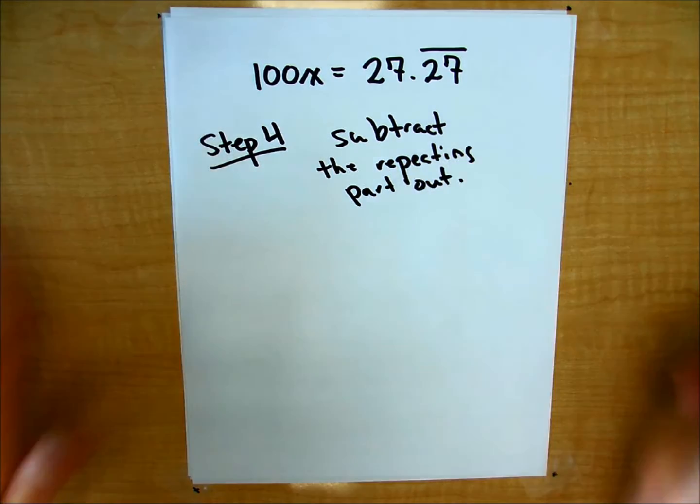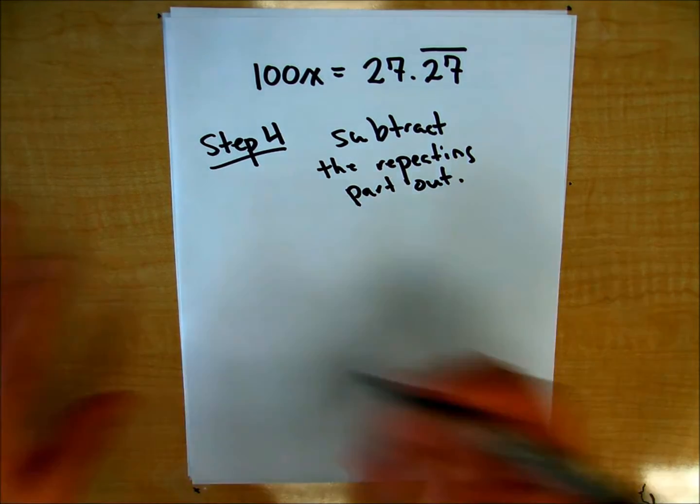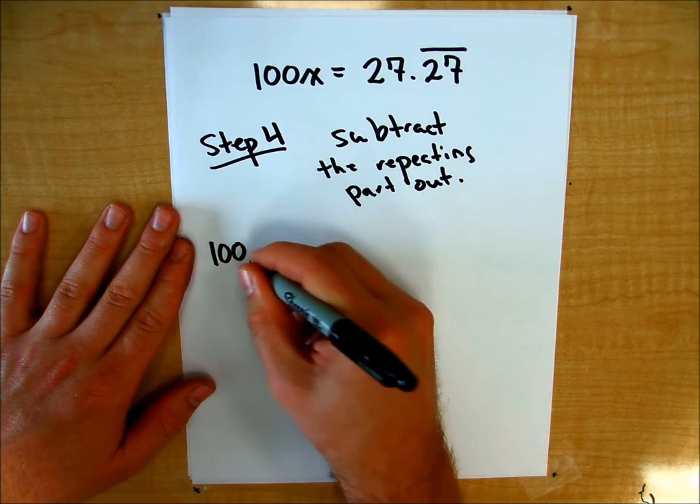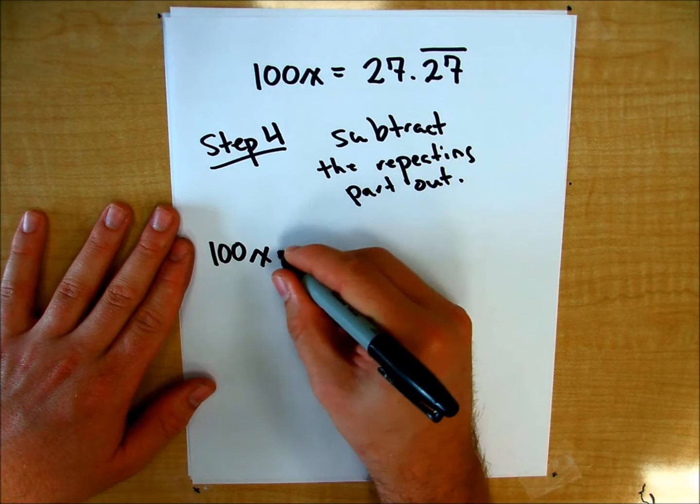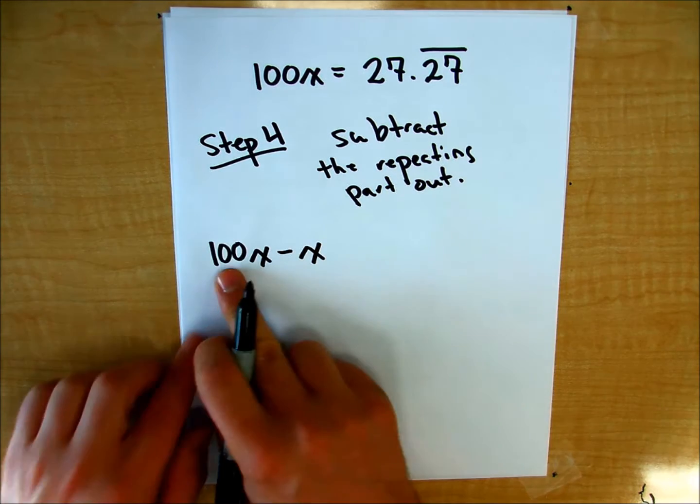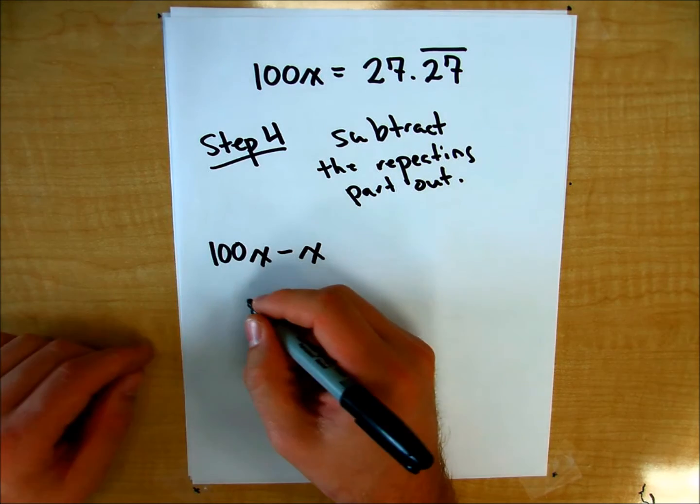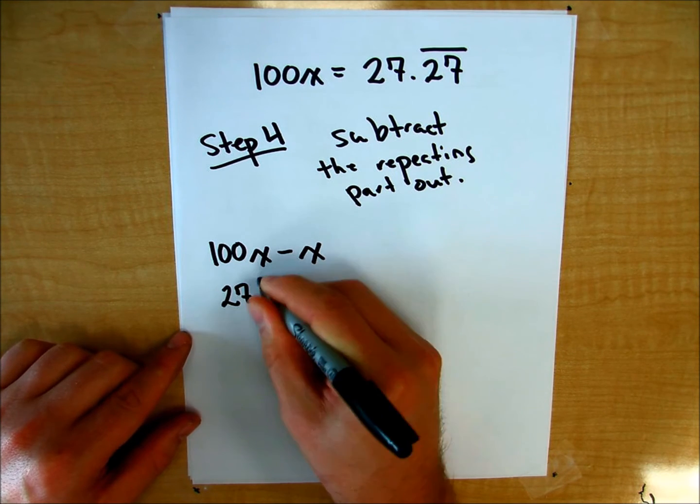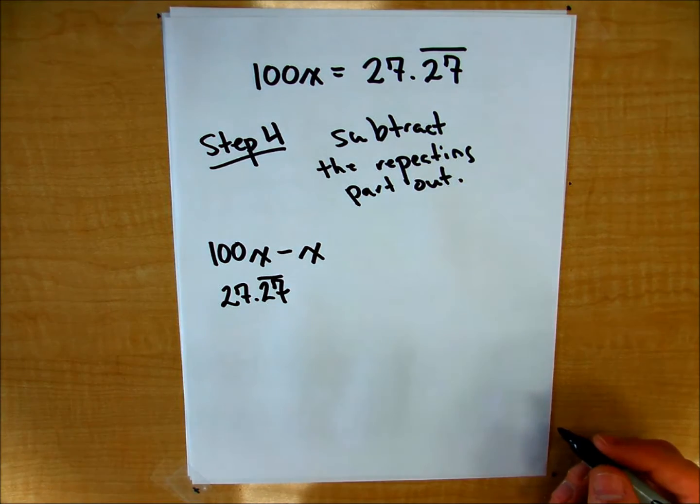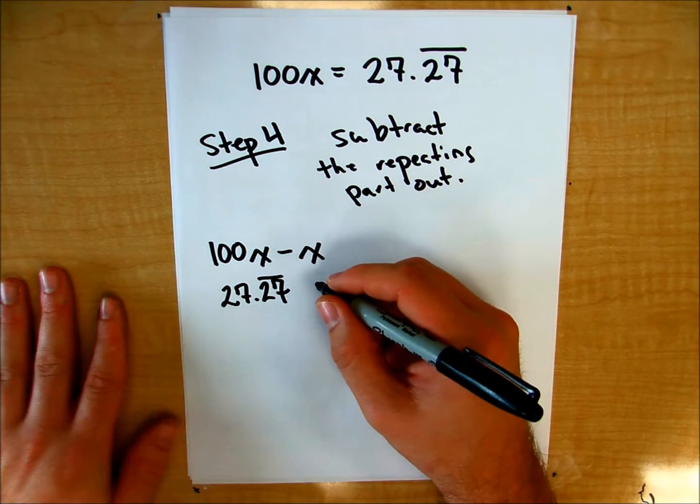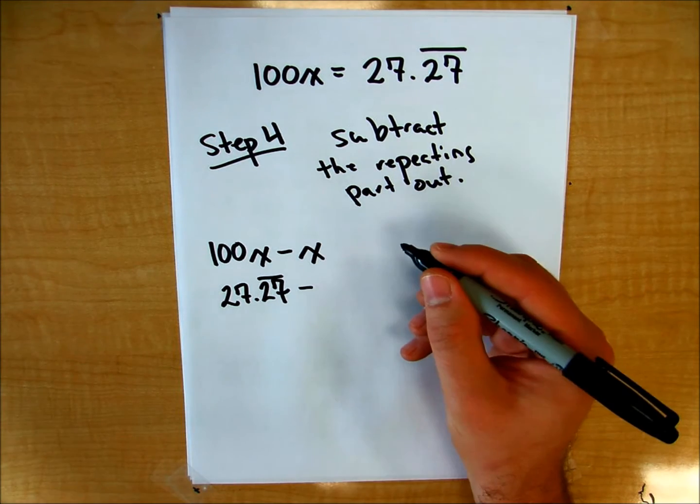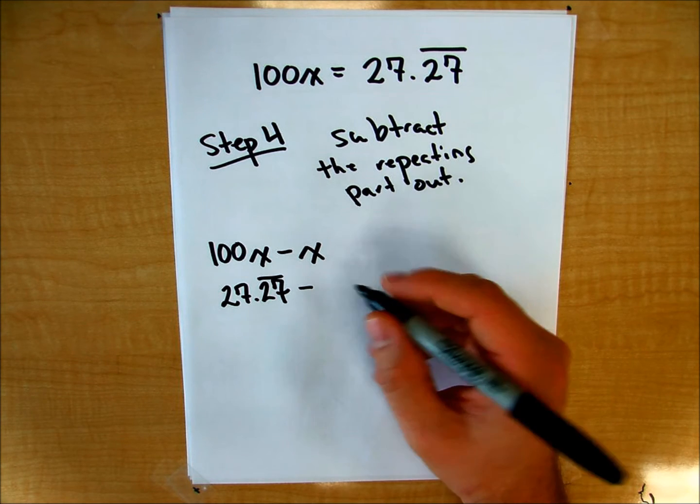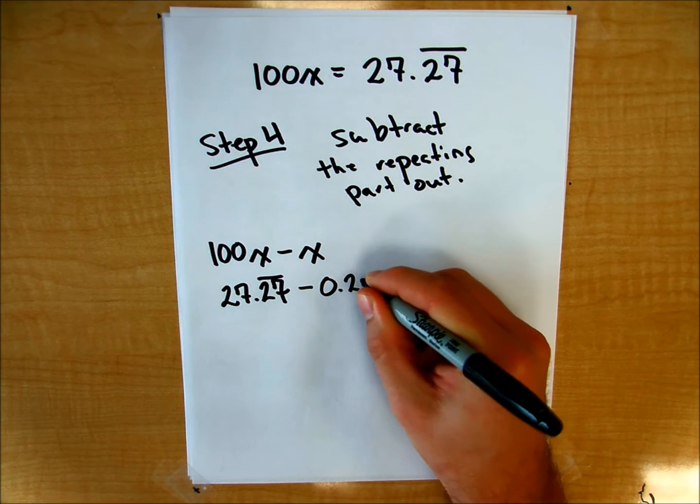Now, and this is the very clever thing. So we're just going to say 100x minus x. Okay? So 100x is the 27.27 repeating, it has that 27 in front of the decimal. And my x is just my 0.27 repeating.